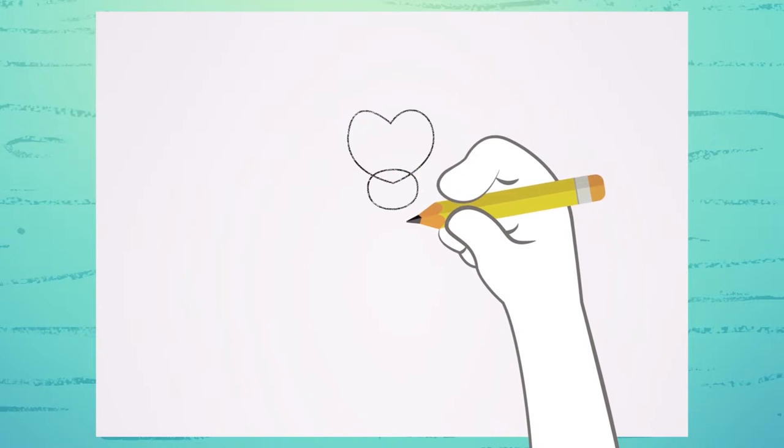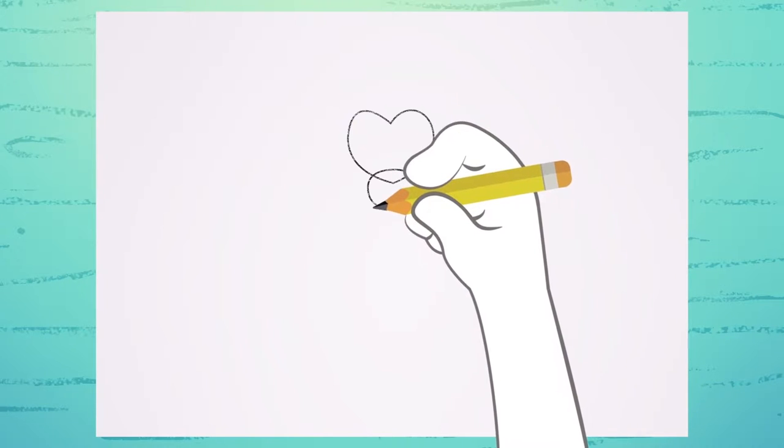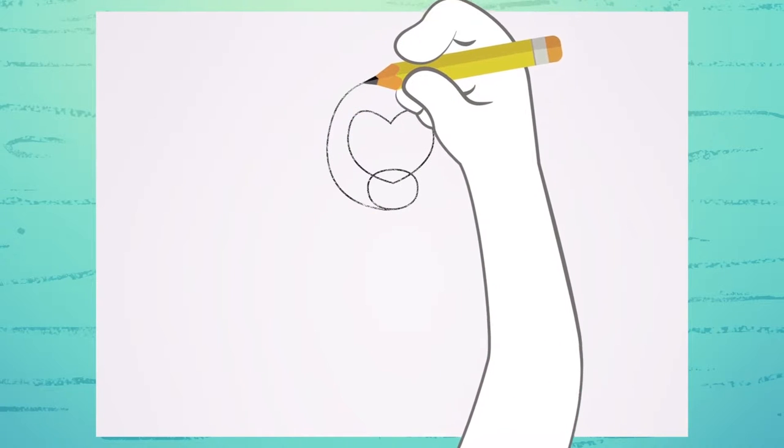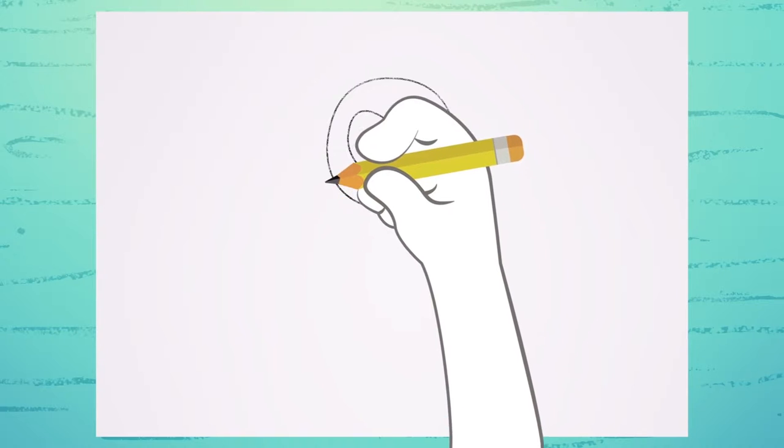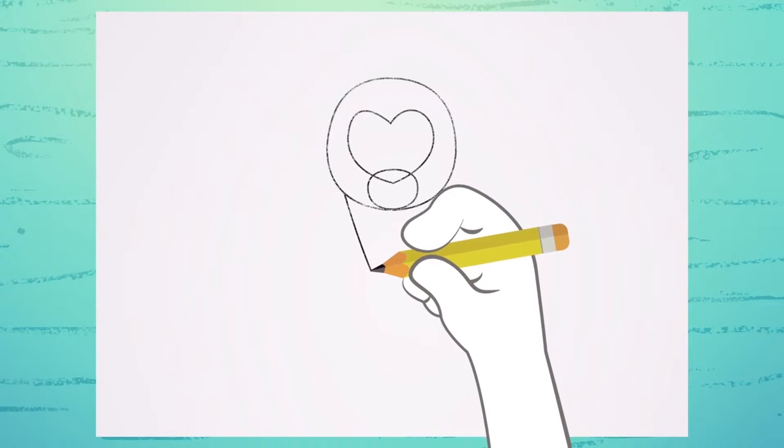Now, draw an ice cream scoop like this, so that the heart and the circle are inside it. Now, draw the ice cream cone all the way down here.